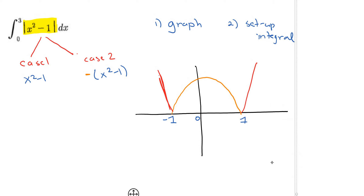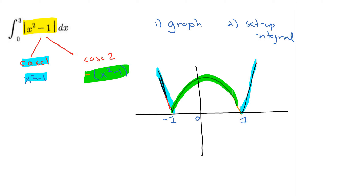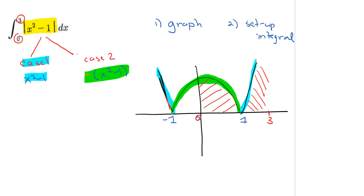Case 1 is this blue part — that is x squared minus 1, the original function that hasn't been reflected. Case 2 is the green part that's been reflected across the x-axis. For the actual problem, we're finding the area between 0 and 3. So we need to find the area from 0 to 1 and then add that to the area from 1 to 3. That's why it's very important to graph the function first.